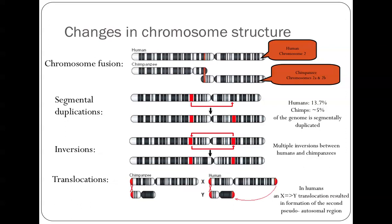One obvious thing known before people sequenced the genomes is the difference in chromosome number. We have one fewer autosomal chromosome than chimpanzees. Human chromosome 2 is actually a fusion of two chimpanzee chromosomes, which have been called 2A and 2B to standardise the nomenclature. We also have segmental duplications — about 14% of the human and 5% of the chimpanzee genome — multiple inversions, and translocations where bits of one chromosome break off and get placed onto another.